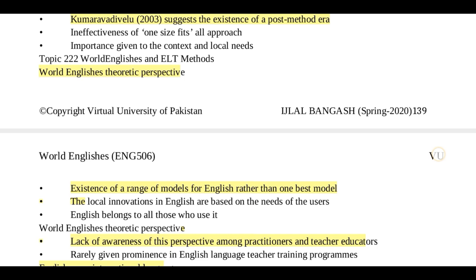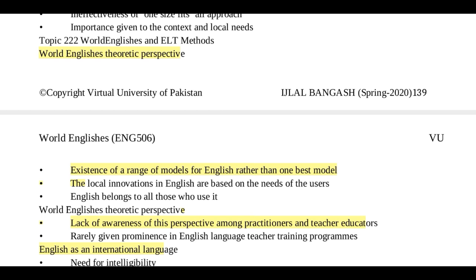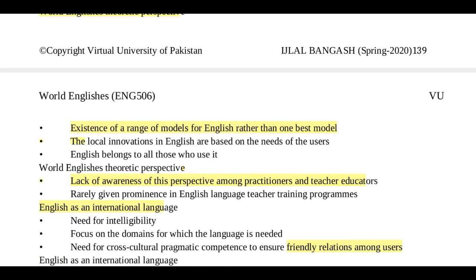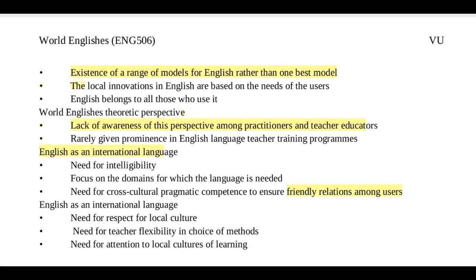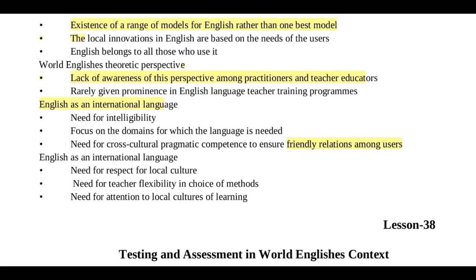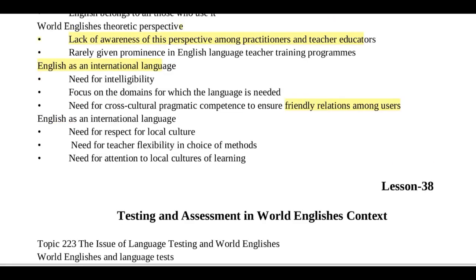Topic 222: the theoretical perspective suggested by Braj Kachru. According to some assumptions, it suggests the existence of a range of models — a large number of models rather than just one. Local innovations in English are based on the needs of users, and English belongs to all those who use it. If English is used as an international language, it is necessary to understand intelligibility, focus on domains for which the language is needed, maintain friendly relations among users, respect local culture, maintain teacher flexibility, and attend to the local culture of learning.